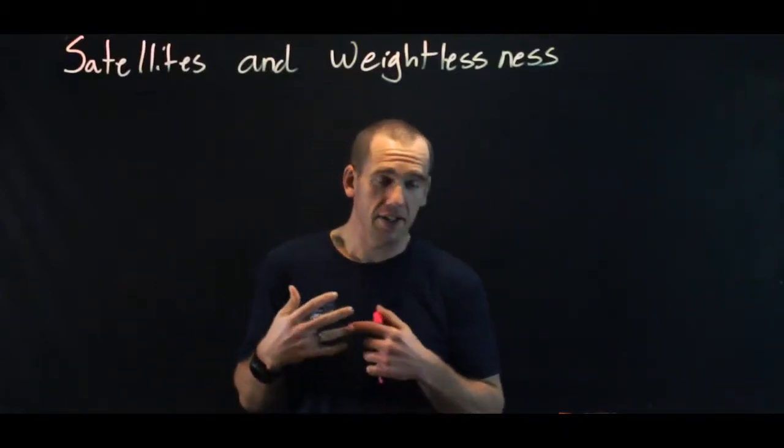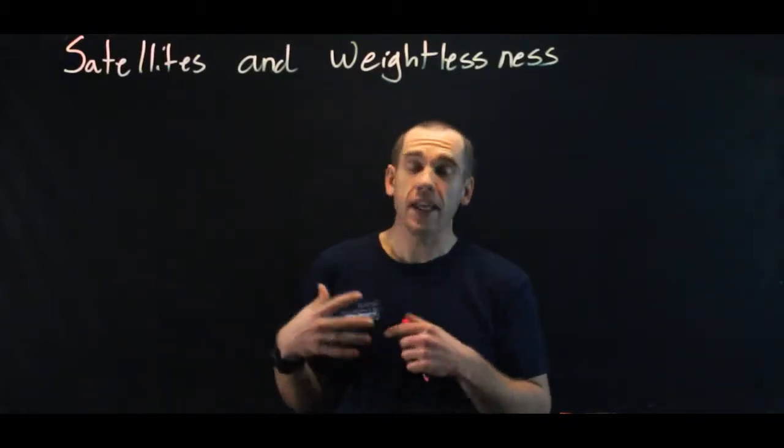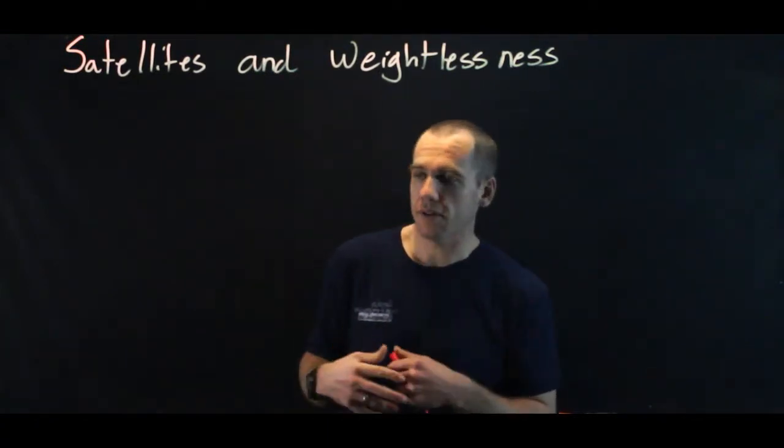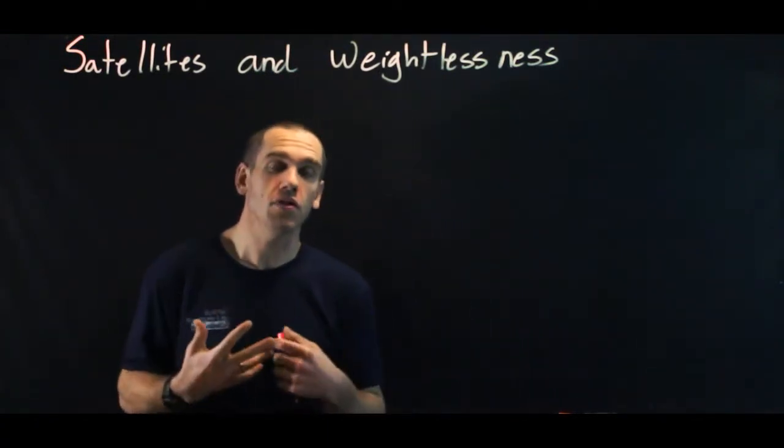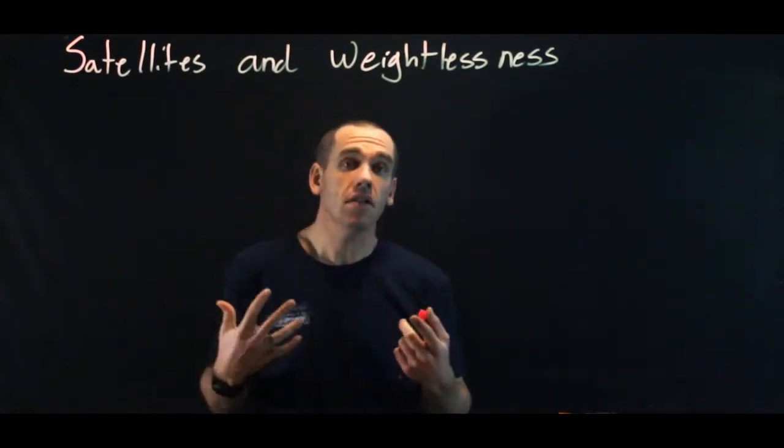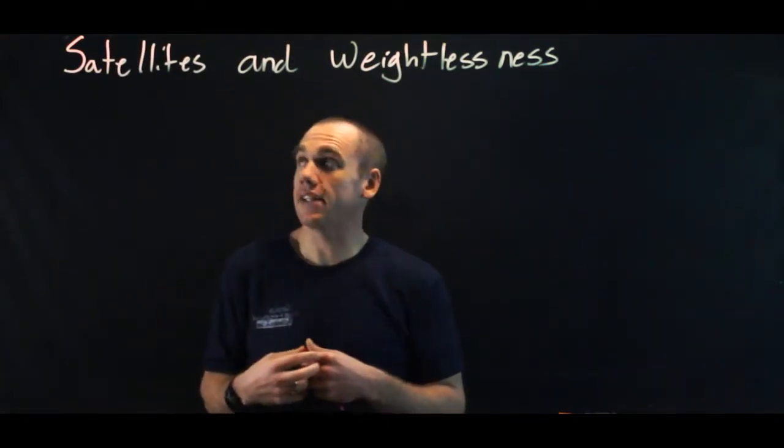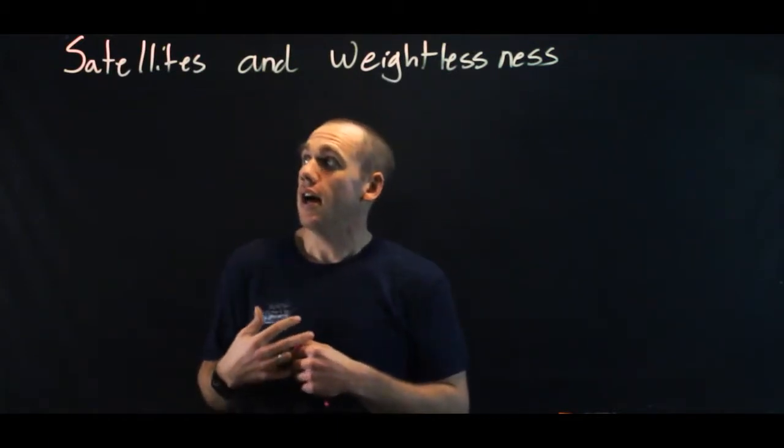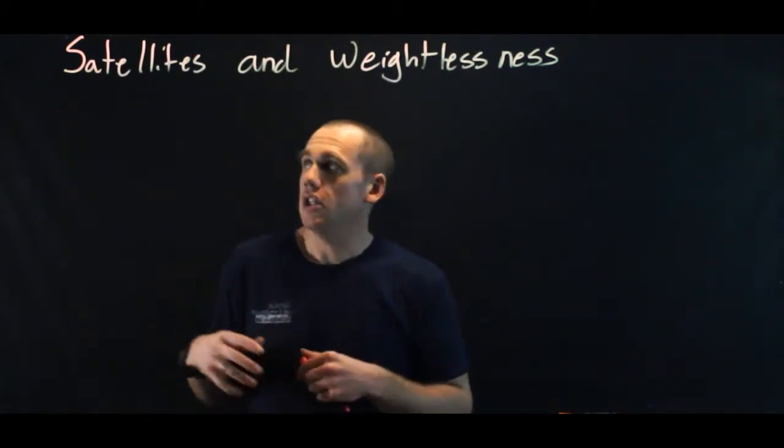A satellite is merely an object that is orbiting another body, and we have lots of satellites around Earth. The most famous one is the moon, Earth's natural satellite. There are all kinds of artificial or man-made satellites that orbit the Earth. We rely on them for communications, weather, global positioning, all kinds of things.